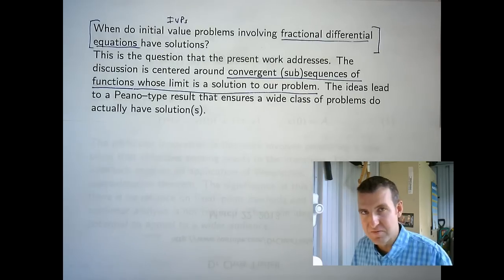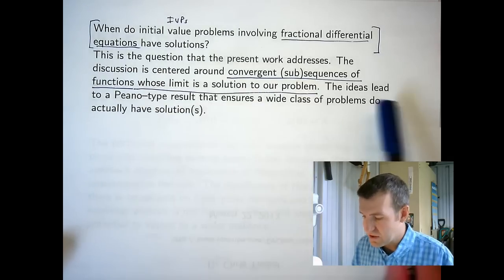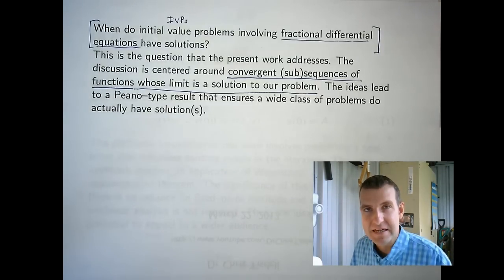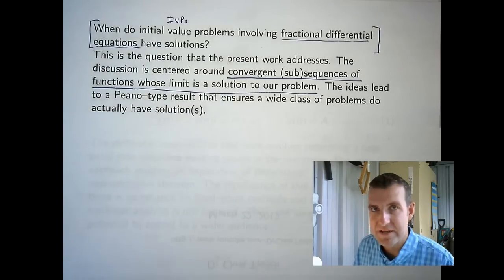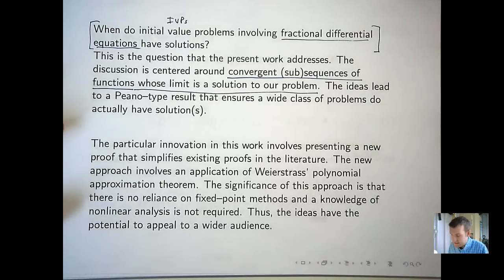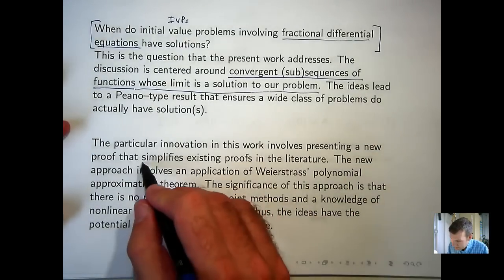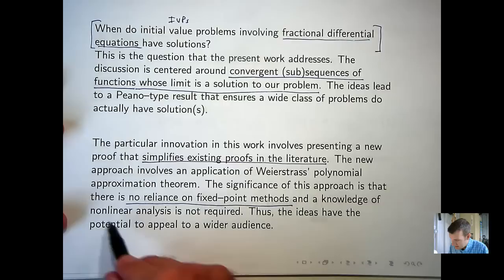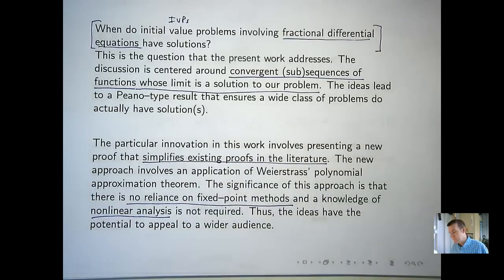What is the significance of the result I'm going to show you? The result can be traced back to Peano for regular ordinary differential equations. The benefit is that if certain problems satisfy the conditions of the theorem, then we know the problem has at least one solution. The ideas are new in the proof of the main result, and I claim that using Weierstrass and Arzela-Ascoli simplifies existing approaches in the literature — mainly because there's no reliance on fixed point theorems or non-linear analysis. For example, some people have proved this result via the Schauder fixed point theorem, but that's not necessary here.